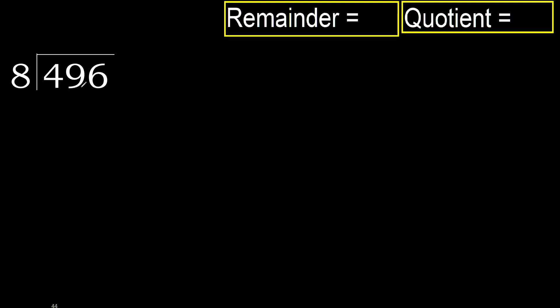496 divided by 8. 4 is less than 8, therefore next. 49 is not less than 8, therefore with 49 and 8, multiply by which number is nearest to 49 but not greater. 8 multiply by 7 is 56, which is greater.